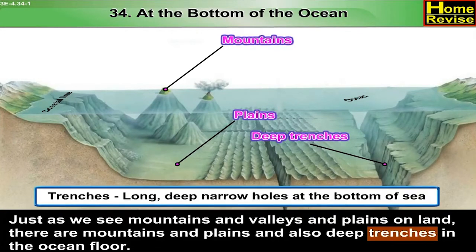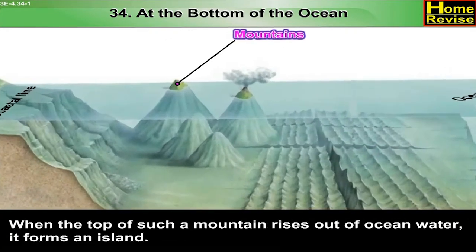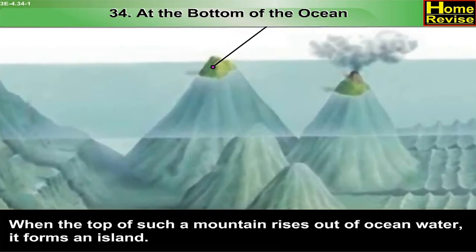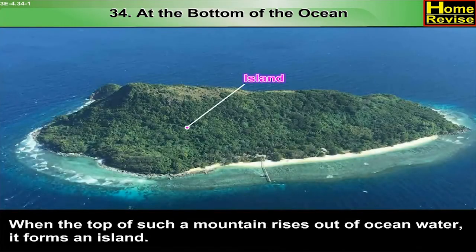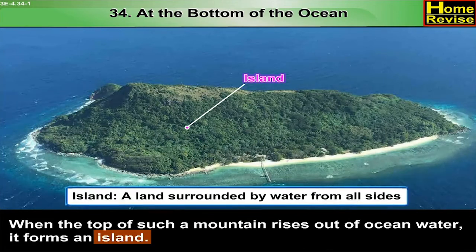Trenches are long, deep, narrow holes at the bottom of the sea. When the top of such a mountain rises out of ocean water, it forms an island. An island is a land surrounded by water from all sides.